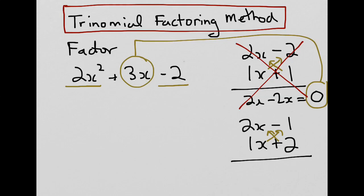We would get 4x - 1x, which equals 3x. We look at that value, compare it to the middle term, and we know that we have identical terms. So we've got the factors.